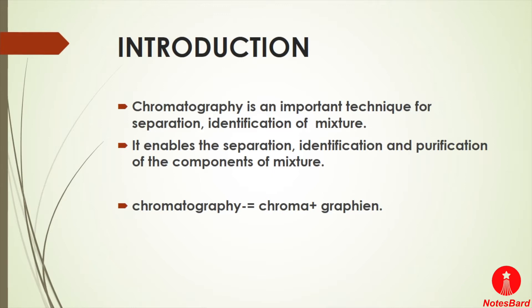The first analytical use of chromatography was described by two scientists, James and Martin, in 1952, using gas chromatography. Chromatography methods are of different types, including gas chromatography, column chromatography, affinity chromatography, adsorption chromatography, thin layer chromatography, ion exchange chromatography, and many more.